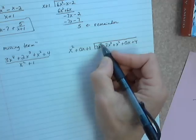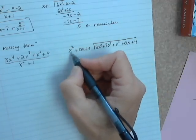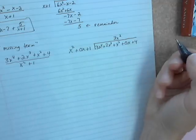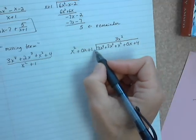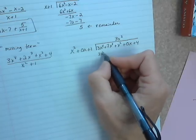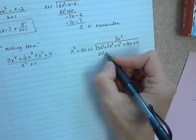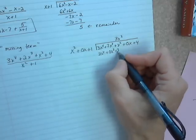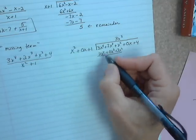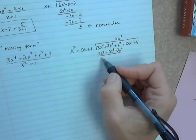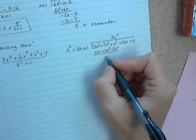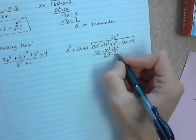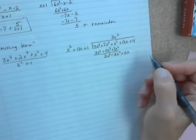We go through the process like before — divide 3x⁴, the leading term, by the leading term x². 3x⁴ divided by x² is 3x². Multiplying 3x² by the whole outside: 3x² times x² is 3x⁴, 3x² times 0x is 0x³, and 3x² times 1 is 3x². That placeholder is important for this subtraction: 3x⁴ minus 3x⁴ is 0; 2x³ minus 0 is 2x³; x² minus 3x² is minus 2x². Drop down the next term, plus 0x.